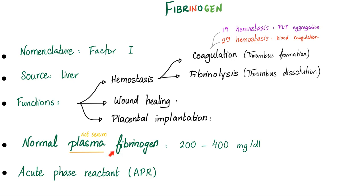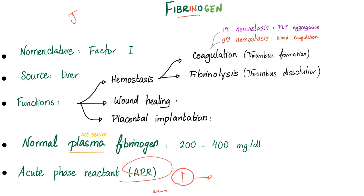Fibrinogen is amazing. Normal plasma fibrinogen is 200 to 400 mg per dL. Notice: normal plasma fibrinogen — not normal serum fibrinogen — because there is no fibrinogen in serum. Fibrinogen is an acute phase reactant, meaning if there's any inflammation, it's not shocking to see high plasma fibrinogen levels. So a normal fibrinogen level does not rule out hypofibrinogenemia if the patient has acute inflammation, because fibrinogen is an acute phase reactant.